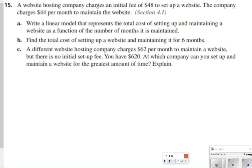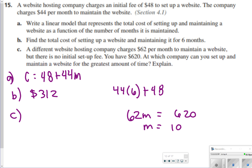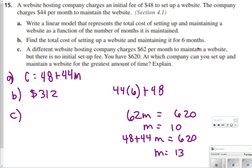For number 15a, write a linear model for the total cost of setting up and maintaining a website. Let c equal cost: c equals 48 plus 44 times m, where m is the number of months. For part b, total cost for 6 months: 44 times 6 plus 48 equals 312. For part c, another website charges $62 per month with no setup fee — with $620 you can use it for 10 months. Using the original company's equation with $620, solving for m gives 13 months, so the original company is better.